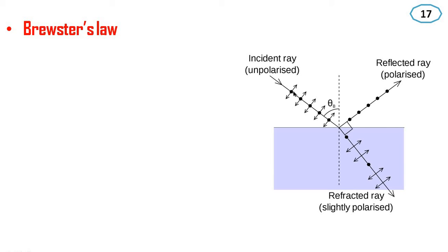In the diagram, a dot represents unpolarized light and a line represents polarized light. So the incident ray is unpolarized light (dot), the reflected ray is polarized light (line), and the refracted ray is partially polarized (dot), meaning it is slightly polarized.